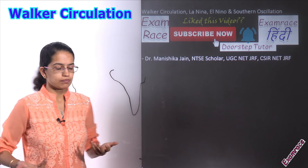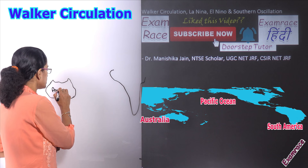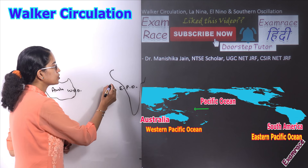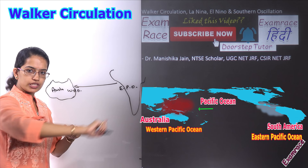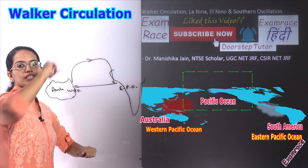You have the Pacific Ocean — on the east of the Pacific Ocean you have South America, and towards the west you have Australia. This is the eastern Pacific Ocean and this is the western Pacific Ocean. The trade winds on the surface blow from the eastern Pacific to the western Pacific, while in the atmosphere they complete the circle and go back towards the eastern Pacific. This circulation is completed on the surface as well as in the atmosphere.